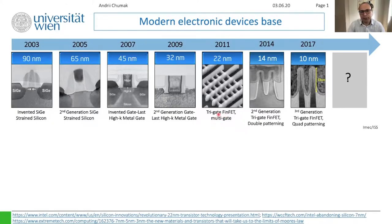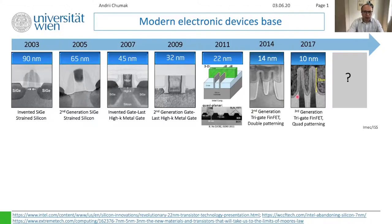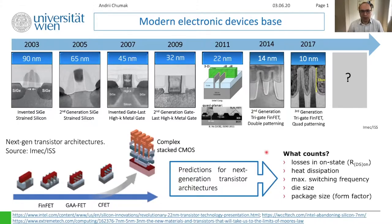Then they switched to so-called FinFET — named after the fin of a fish. This means they took the gate regions and started to make them vertical, increasing the area between the gate contact and the semiconductor. This helped decrease sizes further, getting down to 20 nanometers. They then put several fins together in second and third generation designs. The real fundamental limitation of CMOS is the lattice constant of silicon, which is in the atomic range, but they will continue searching for new advanced methods to make computers better and better.